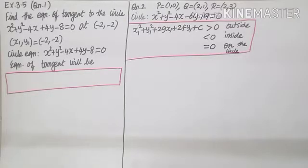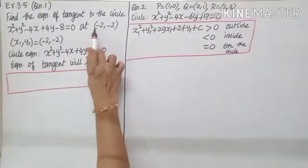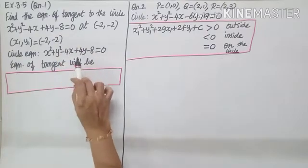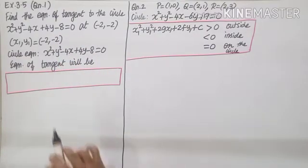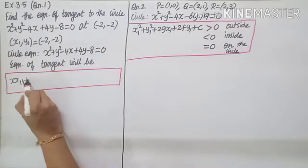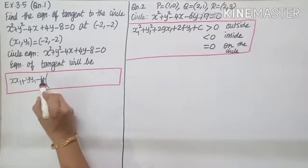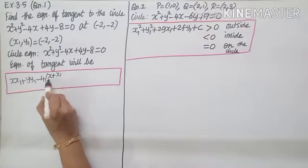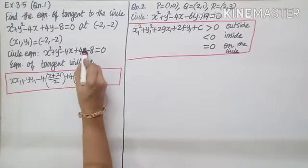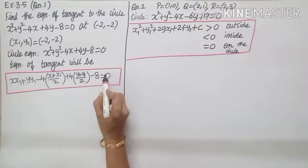Exercise 3.5, question number 1: Find the equation of tangent to the circle x² + y² − 4x + 4y − 8 = 0 at (−2, −2). Take the point as x1, y1 and copy the circle equation. x square will become x·x1, y square will become y·y1. Minus numbers write as it is. Minus 4 into x will become (x + x1)/2. Plus 4 into y will become (y + y1)/2. Minus 8 equals 0 as it is.